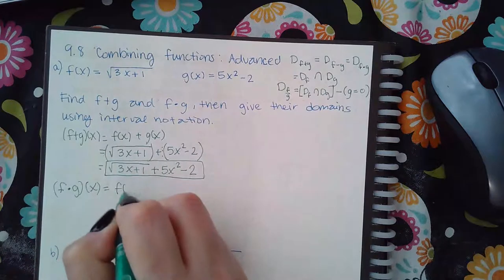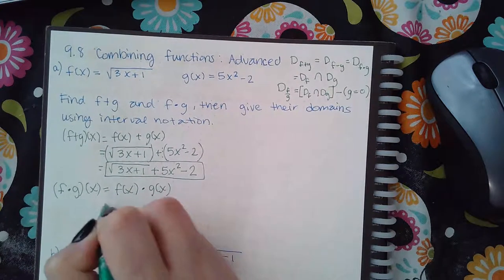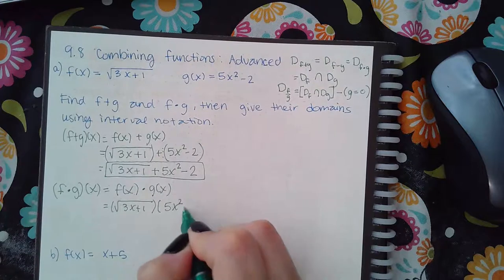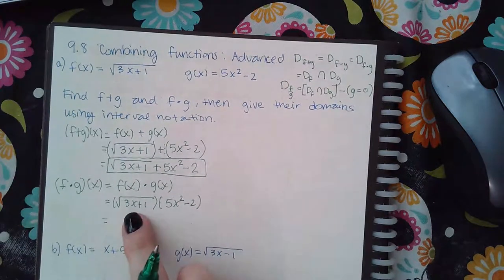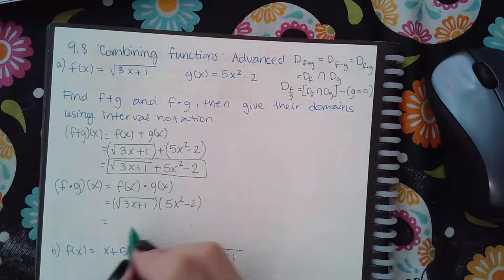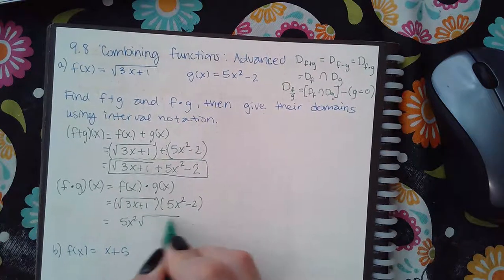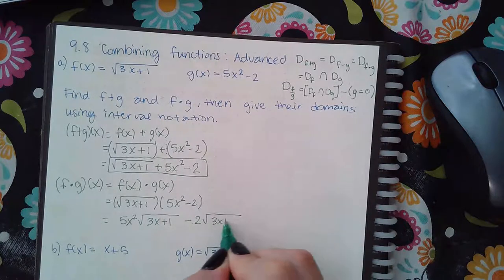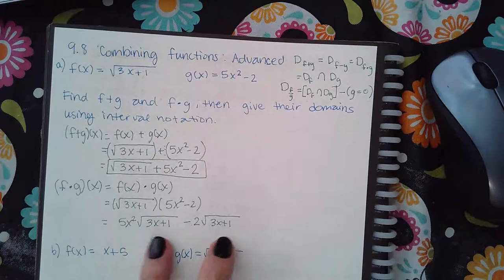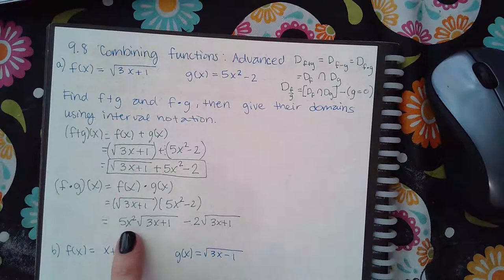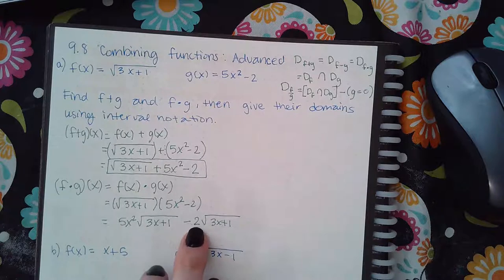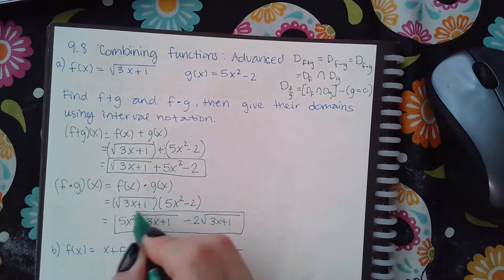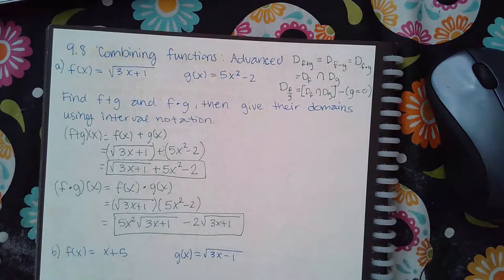For f times g, that's the same as f of x times g of x. Plugging in both functions and distributing the radical, we get 5x squared times the square root of 3x plus 1, minus 2 times the square root of 3x plus 1. These are not like terms — although they both share the radical, this term has variables outside the radical and this term does not, so we can't combine further. That is the answer for f times g.